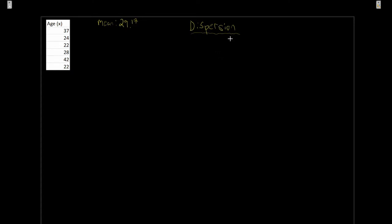Moving on, what we're going to look at is dispersion — saying, okay, we have our measure of central tendency, mean or median. In this case with respect to the mean, we're going to ask: how far away is our data typically falling? That is, if we have an average of 29.17 but all these different values, on average, how far is any one of these values from the mean?